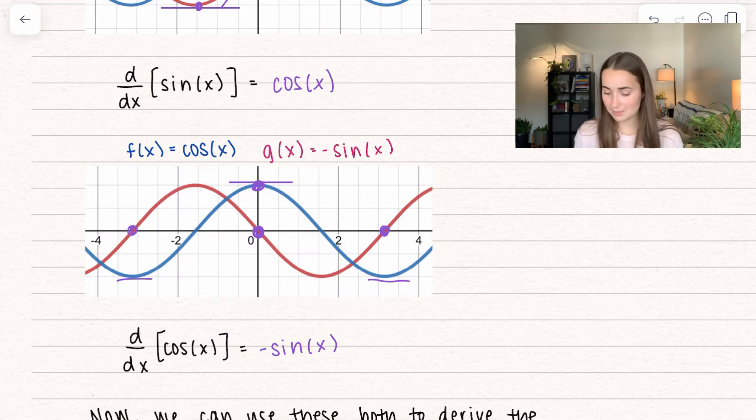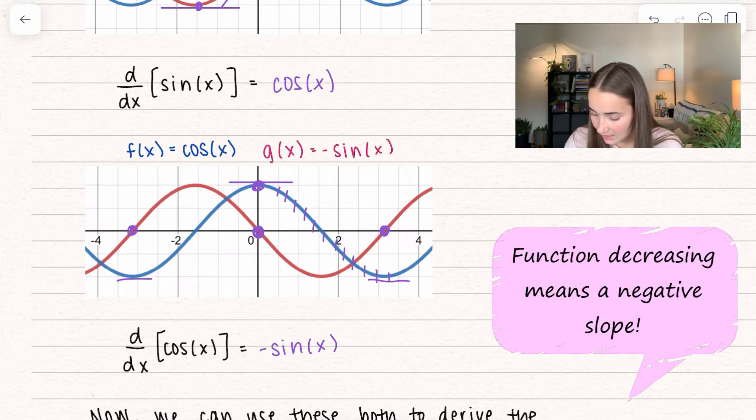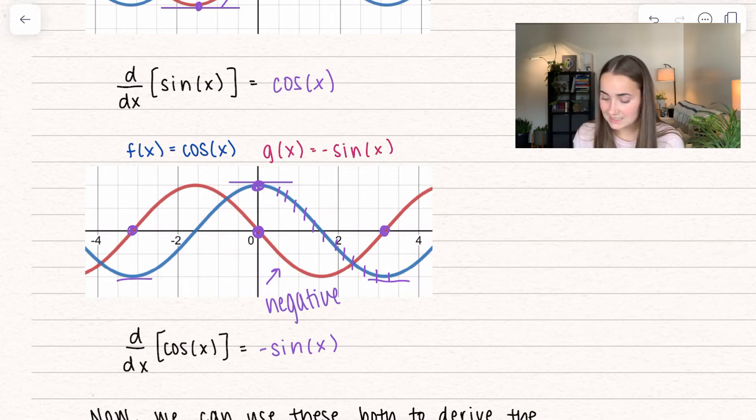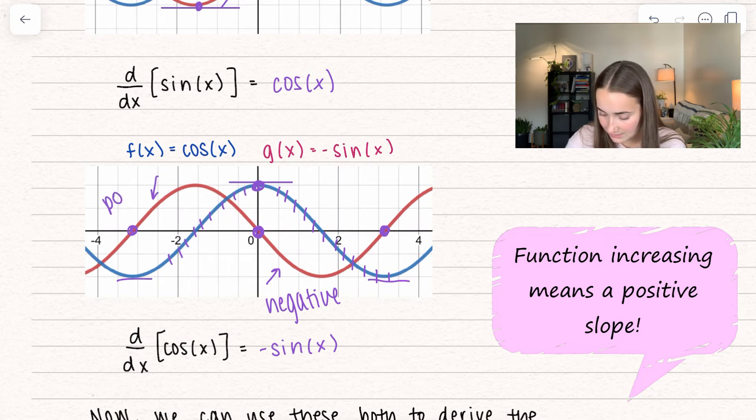The reason it has to be negative is because it has to go along with what the slope is doing. In this region, my function is decreasing, and that's why my negative sine of x is in the negative area. On the other side, our function is increasing, and so my negative sine of x has to be positive.